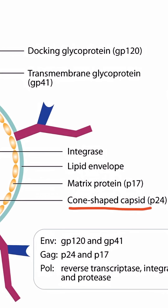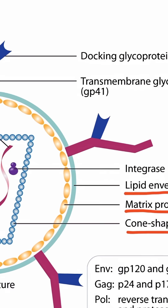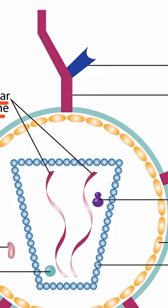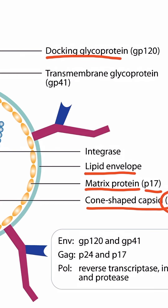The proteins that make up the capsid are also known as P24. Outside of the capsid, you can see that it's surrounded by matrix proteins, also known as P17. Finally, the entire virus is surrounded by a lipid envelope. On the surface of the virus, you can see two glycoproteins: a docking glycoprotein known as GP120, and a transmembrane glycoprotein known as GP41. We'll talk more about the function of these in a second.